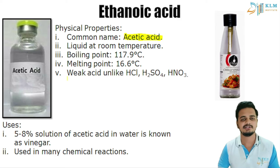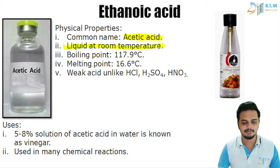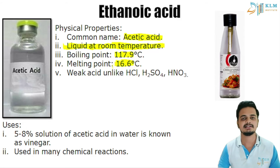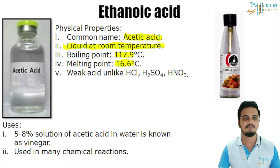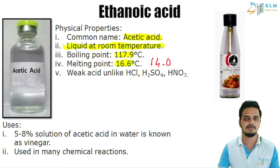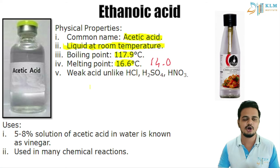The common name of ethanoic acid is acetic acid. It is a liquid at room temperature. Its boiling point is 117.9 degrees Celsius, which is greater than that of water. The melting point is 16.6 degrees Celsius, also greater than water's melting point of zero degrees Celsius. That is why concentrated acetic acid is known as glacial acetic acid — in cold countries, at around 14–15 degrees Celsius, it would start to solidify and look cloudy.